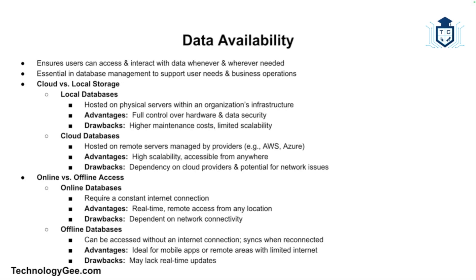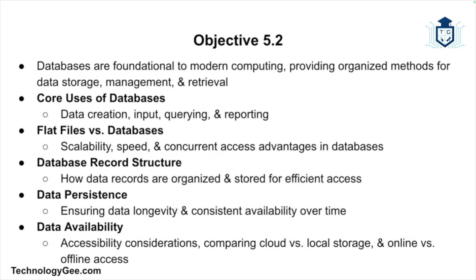Regarding online versus offline access: online databases are designed to be accessed over a network or the internet, meaning they require a constant internet connection. These databases provide real-time access to data from anywhere, but the downside is dependence on network connectivity. Offline databases allow users to access and manipulate data without an internet connection — they sync data when the connection is restored, which is useful for mobile apps or remote locations where internet access may be intermittent. Data availability is a critical factor in database management, ensuring users can access their data wherever and whenever they need it.